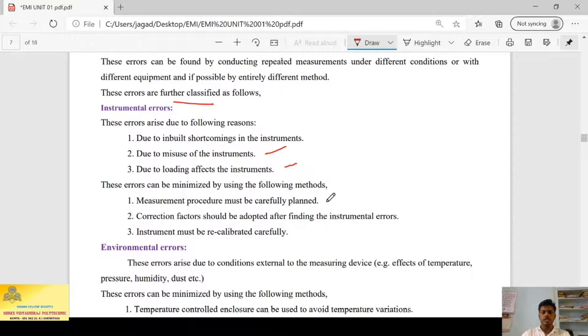These errors can be minimized by using the following methods: measurement procedure must be carefully planned, correction factors should be adopted after finding the instrumental error, then instrument must be recalibrated carefully. You can see in normal vendors they use electronic weighing machines. That frequently has to be calibrated because over the period of time it gives an error. So it should be taken to some authorities to calibrate so that it gives a proper scale.